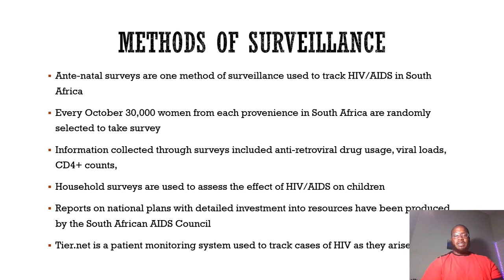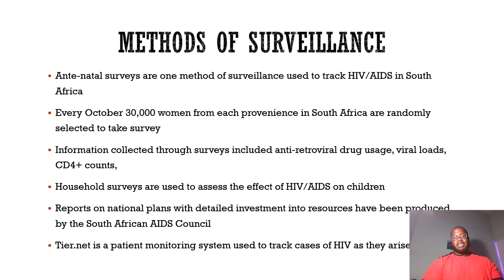Household surveys are used to assess the effect of HIV and AIDS on children. Reports on national plans with detailed investment into resources have been produced by the South African AIDS Council. Interior.net is a patient monitoring system used to track cases of HIV as they arise. Using that monitoring system allows South African health officials to treat HIV-positive individuals in the early stages, which can help reduce the spread of the virus and improve the longevity of lives of those affected.